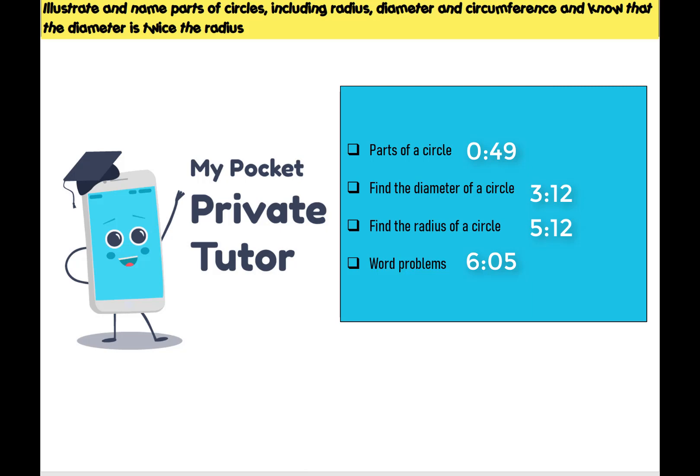In this activity we are going to first learn about the parts of a circle. In year six there are three parts of a circle that you need to be able to identify and name. Next we're going to look at how to find the diameter of a circle, then how to find the radius of a circle, and finish off with some word problems.